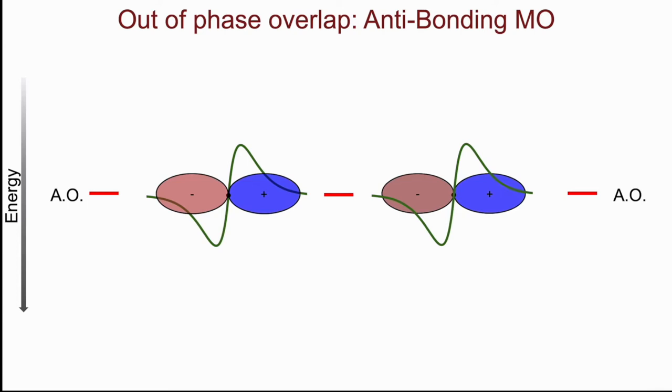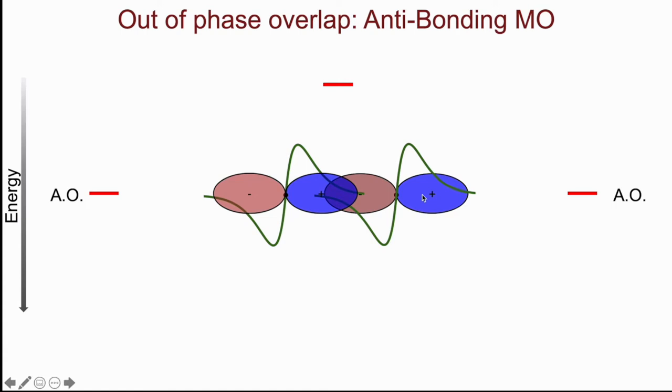As they approach each other, I now get destructive interference in between the two atoms. So here the negative part of the wave function on the atom on the right is overlapping with the positive phase of the orbital on the left. This is destructive interference. The phases will cancel. And as a result, I'll end up with a higher energy molecular orbital.